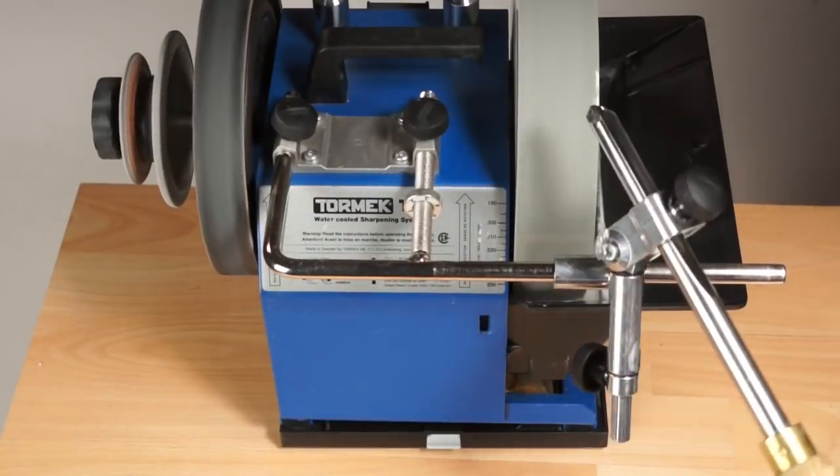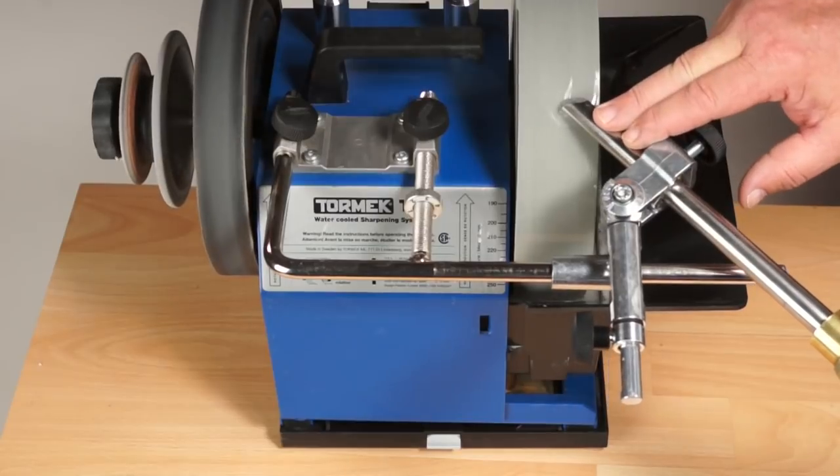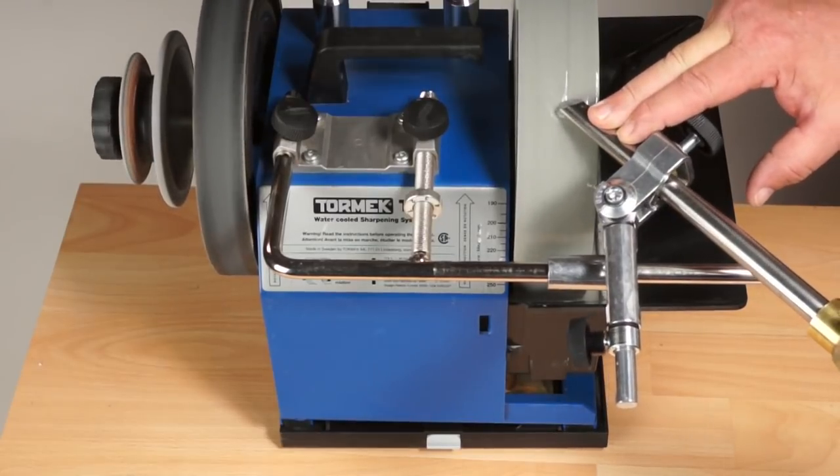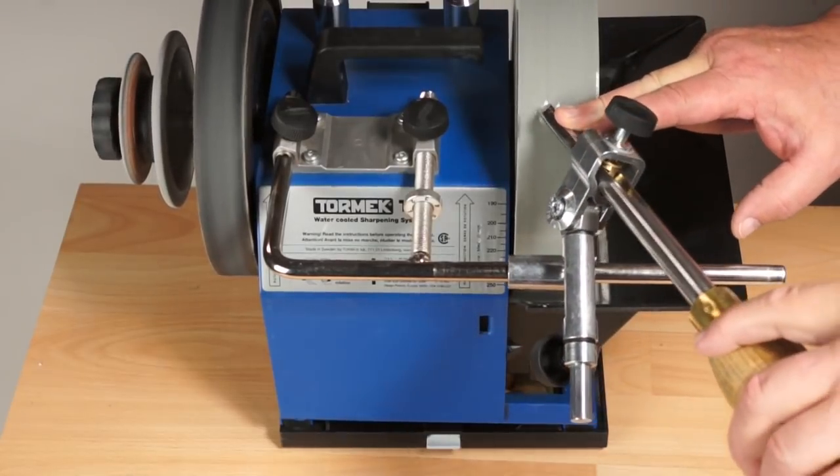Now just start the Tormek, hold the bevel against the grindstone, and roll across at a consistent even pace.